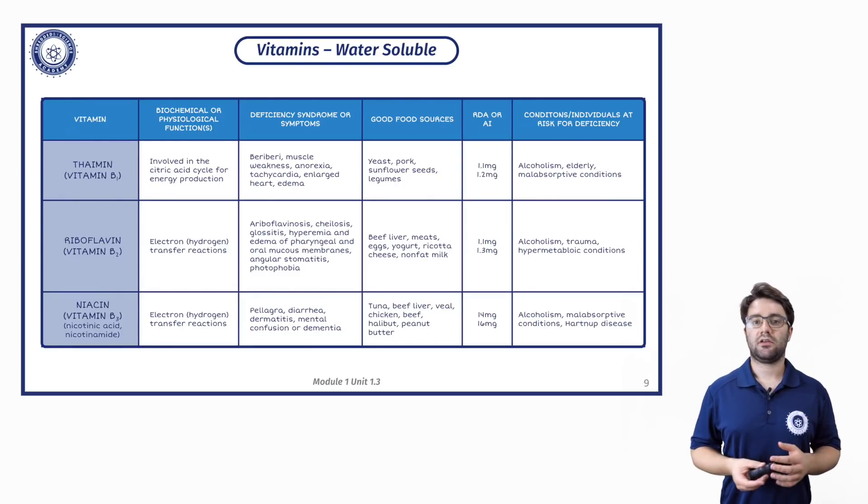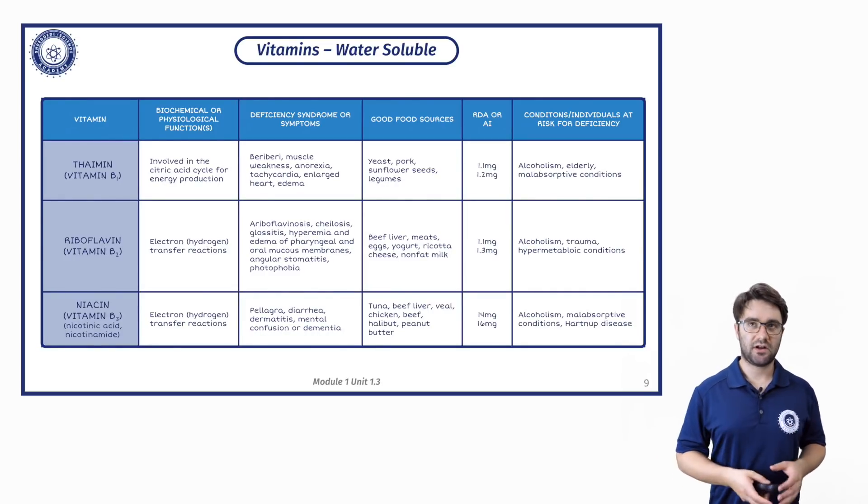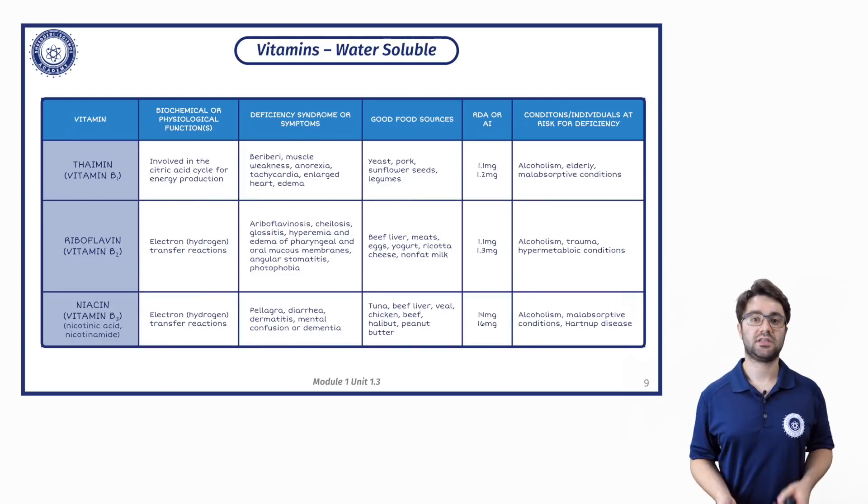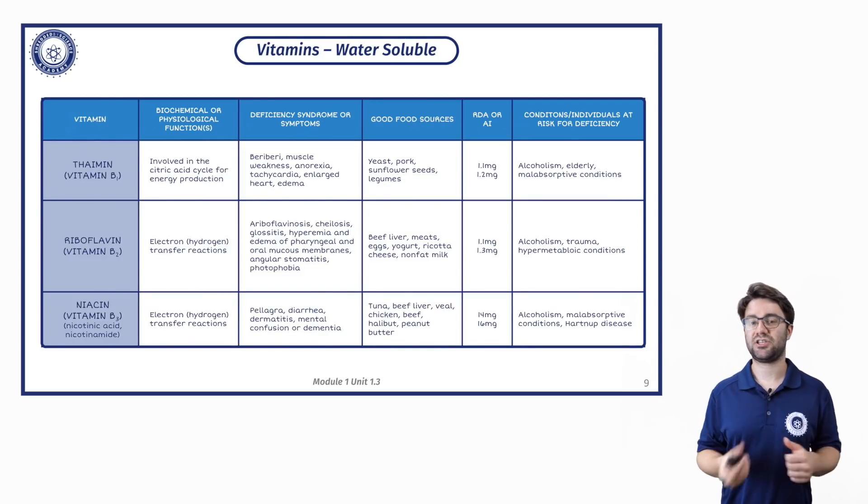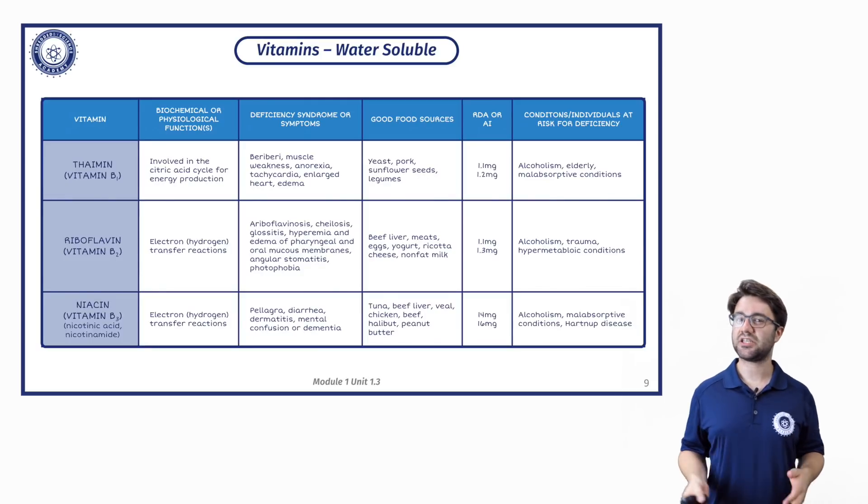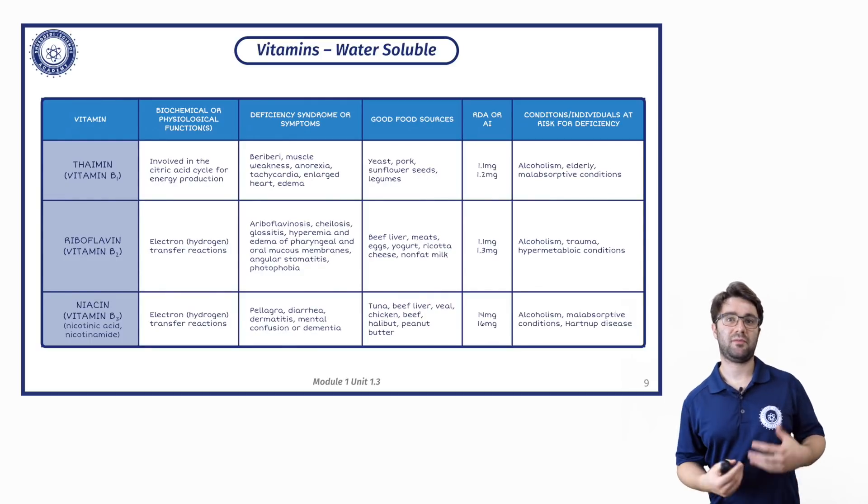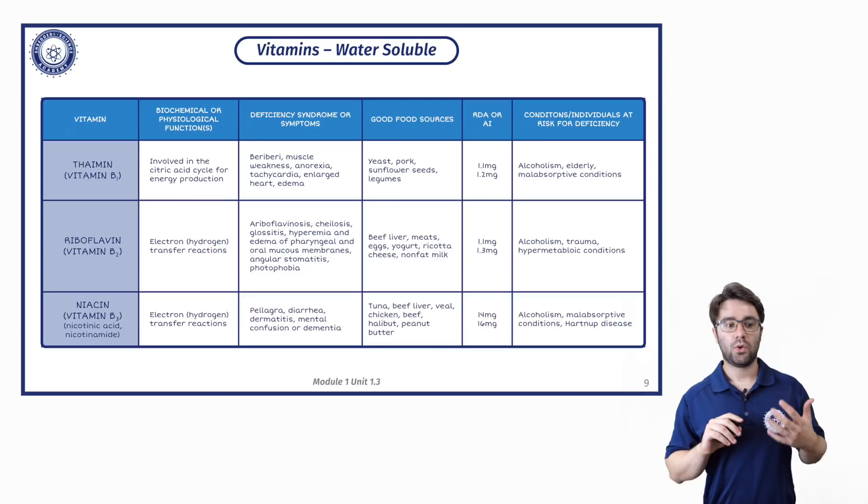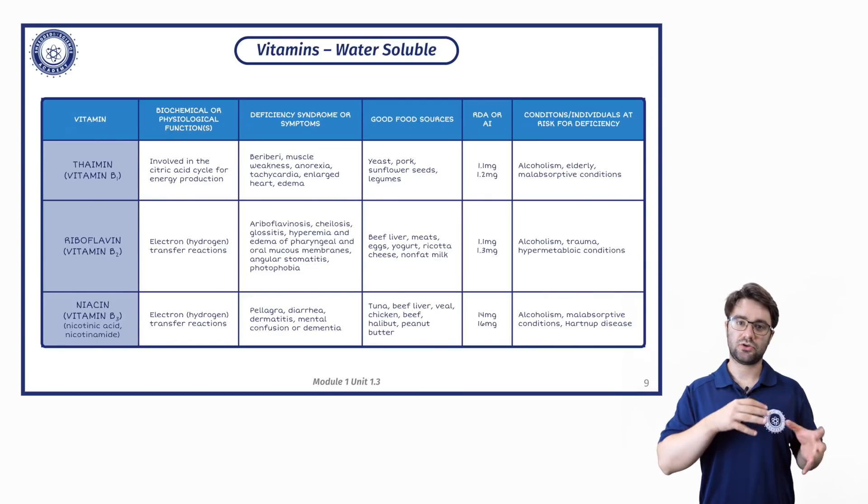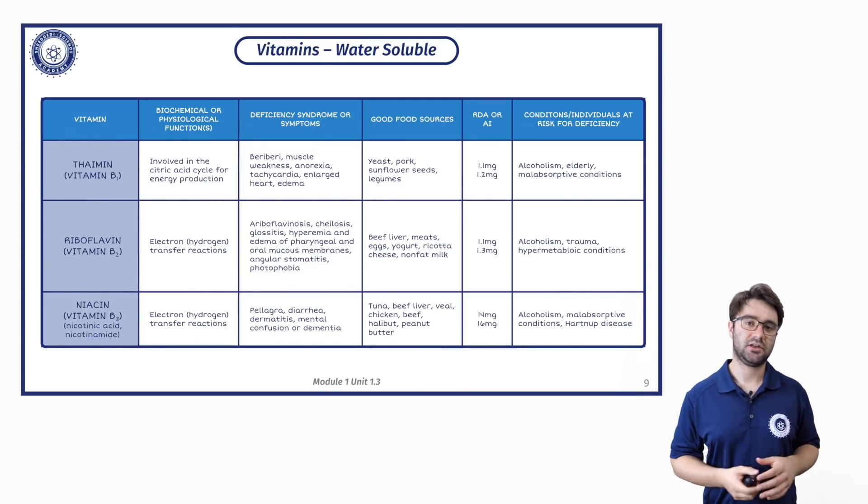If you're working with a range of clients that may have some illnesses, some of you may well be, then the conditions slash individuals at risk for deficiency column will give you some information about potentially the clients that you should look for that maybe have this particular deficiency.